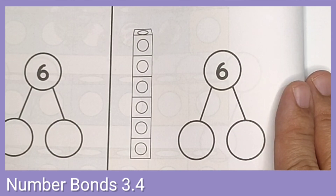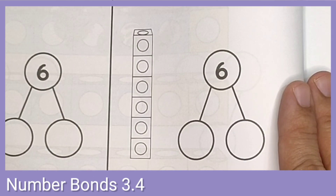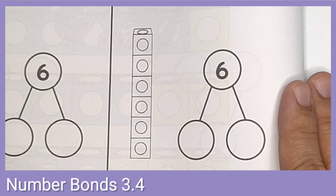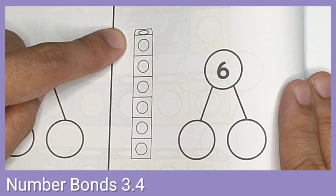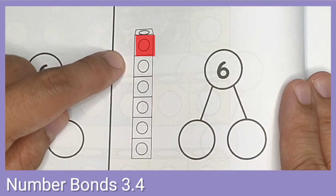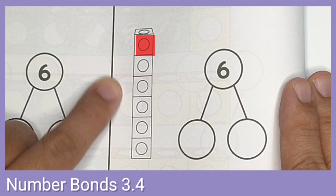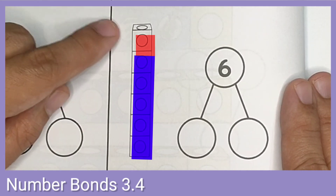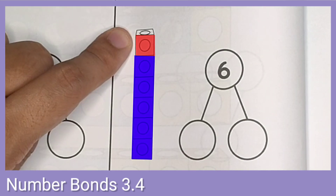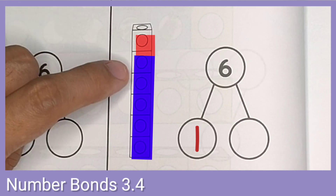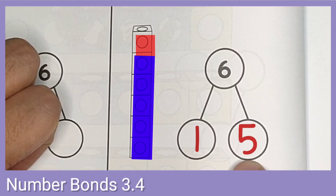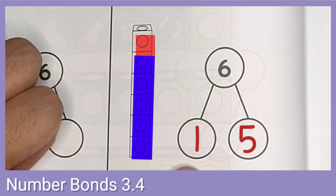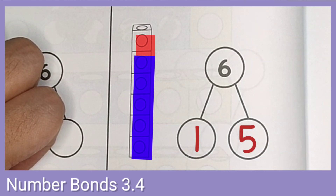Now let's try to color them differently. How about we color only 1 red cube, and then let's color the remaining cubes too. We have 1 red cube, and 1, 2, 3, 4, 5 — 5 blue cubes. 1 and 5 make 6.